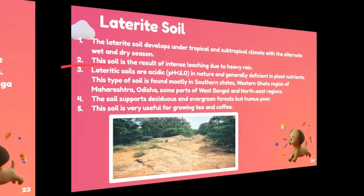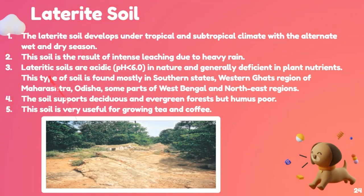Laterite soil develops under tropical and subtropical climates with alternate wet and dry seasons. This soil is the result of intense leaching due to heavy rainfall. The laterite soil is acidic, with a pH lower than 6.0. It is generally deficient in plant nutrients and is therefore not very fertile.